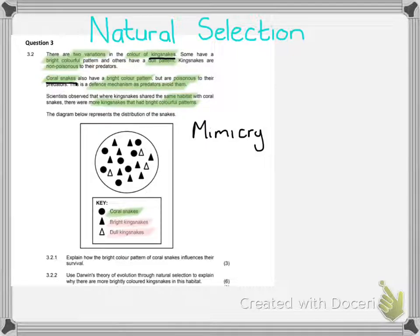They just have similar coloring to their poisonous cousins. So let's have a look at the questions. 3.2.1 says, explain how bright color pattern coral snakes influences their survival. So they simply want you to tell them how does the brightly colored coral snake, what does that do for them for their survival?